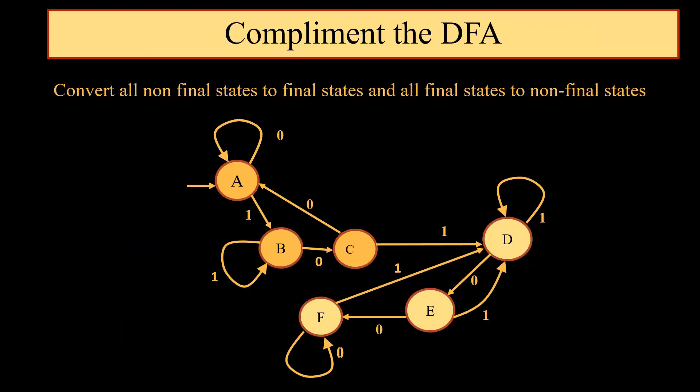Next, we take the complement and we want to draw the DFA for strings not having substring 1, 0, 1. Taking the complement means we will convert all non-final states into final states and all final states into non-final states. So this is how we get the final output.